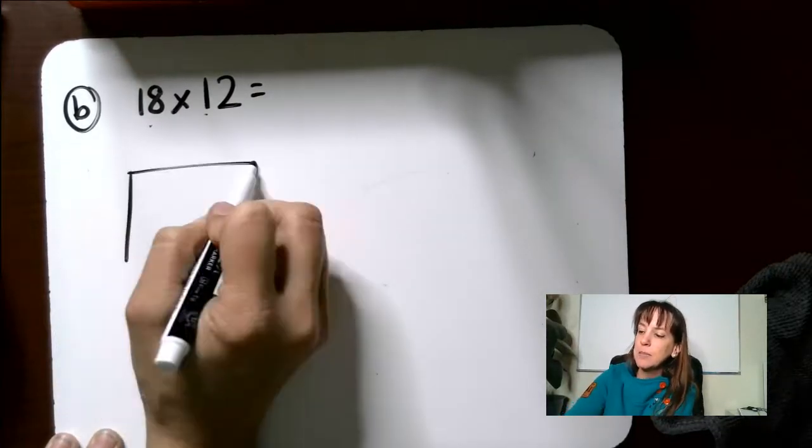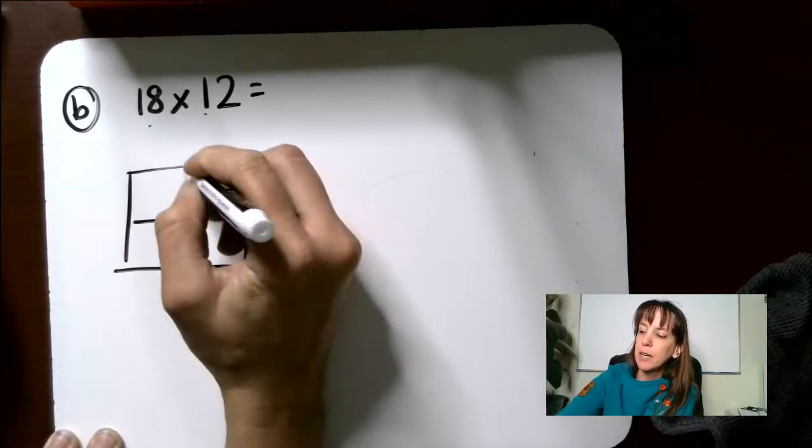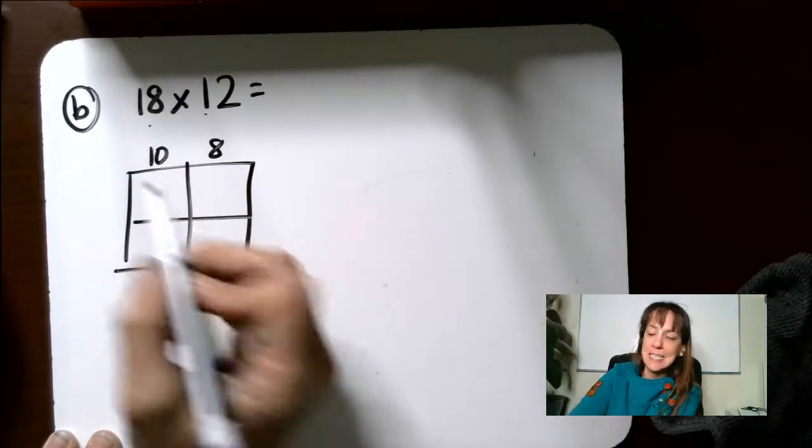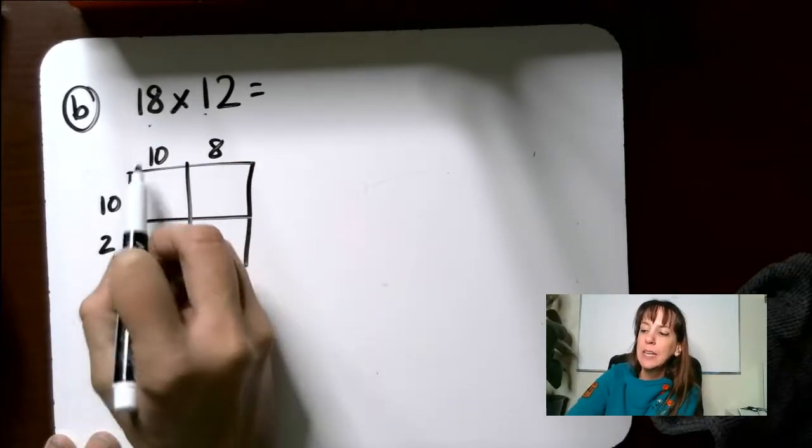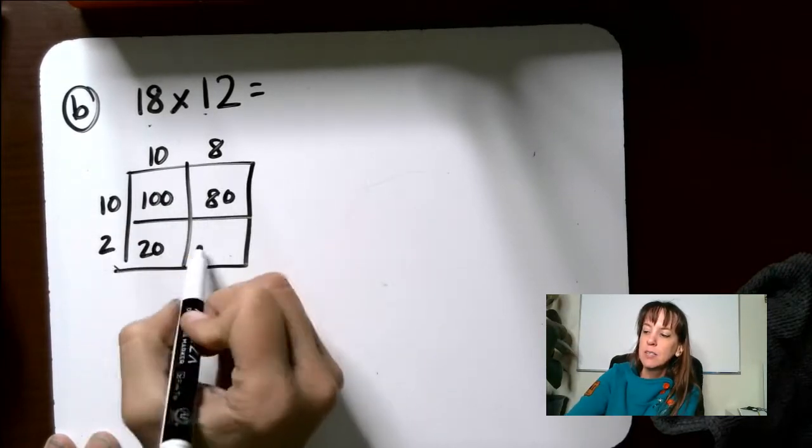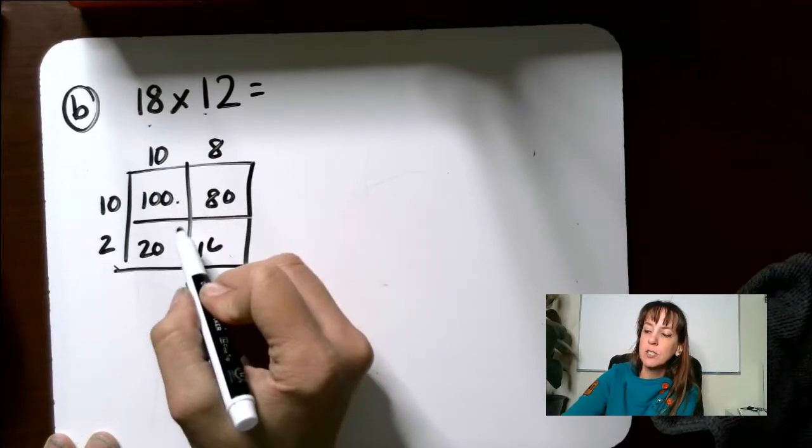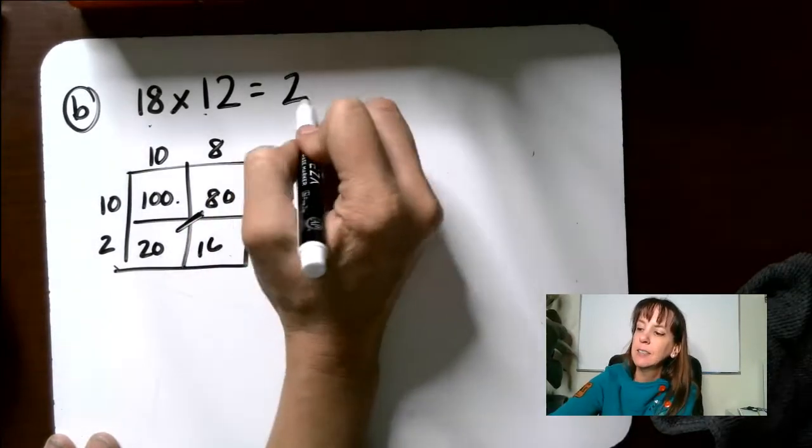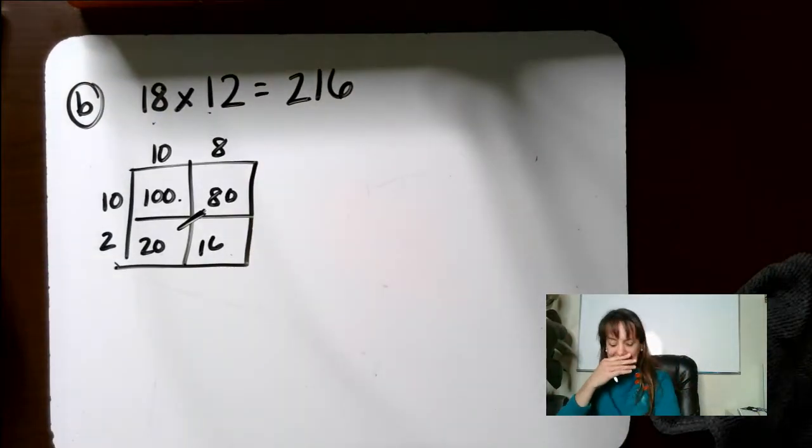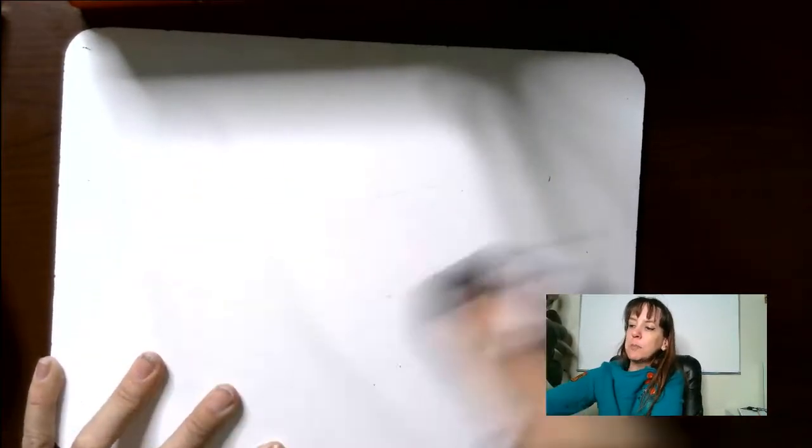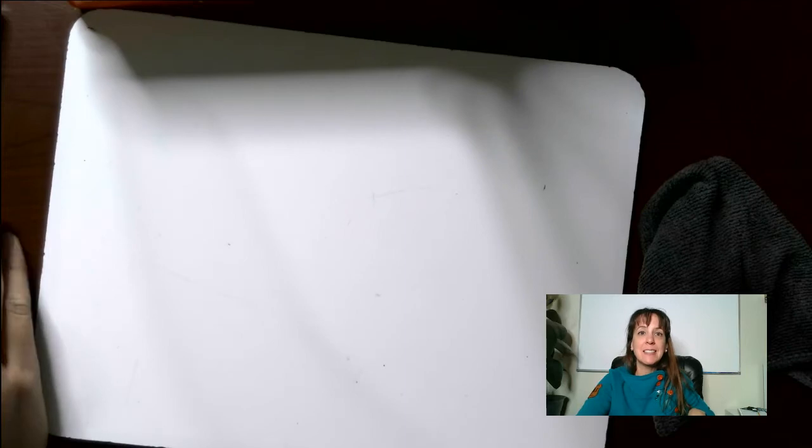I'm going to do a box method for this one. Remember, you can multiply in whichever method you prefer. 10 and 8 is 18. 10 and 2 is 12. This is 1 with 2 zeros, which is 100. This is 8 with a 0, which is 80. 2 with a 0 is 20. And 16. So 100 plus 80 plus 20 plus 16 equals 216. All right, guys. If you have any questions about that, let me know. Those are going to be your multiplication problems. Excellent work.